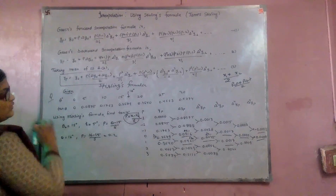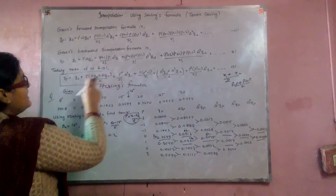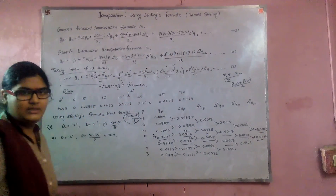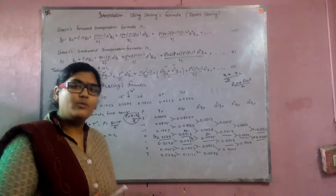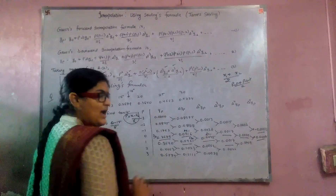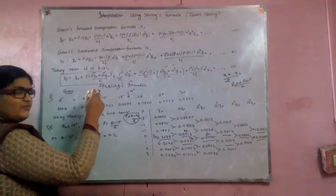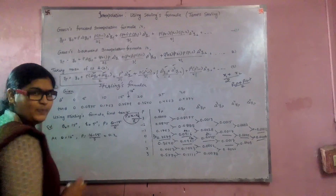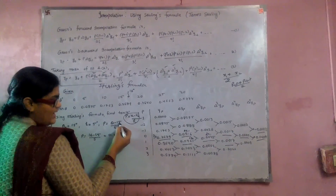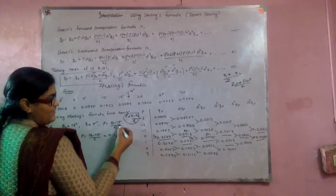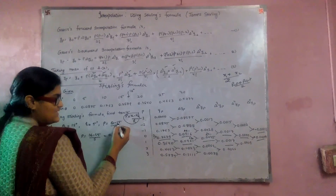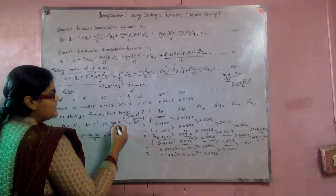To apply Stirling's formula we must first build Newton's forward difference table. The arguments in Stirling's formula are the p values. Substituting θ = 0: p = (0-15)/5 = -3. Substituting θ = 5: p = (5-15)/5 = -2. Substituting θ = 10: p = (10-15)/5 = -1. Then θ = 15 gives p = 0, θ = 20 gives p = 1, and so on.